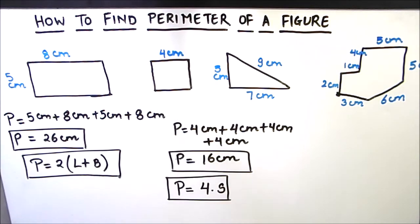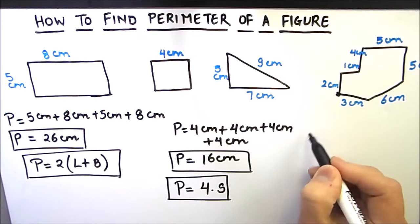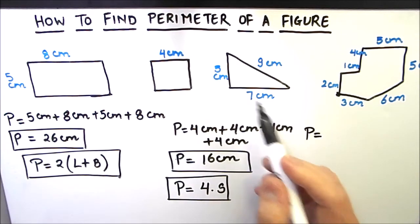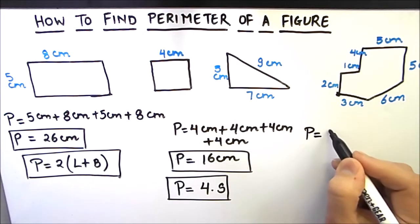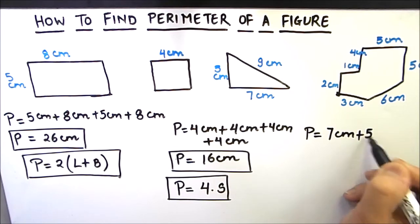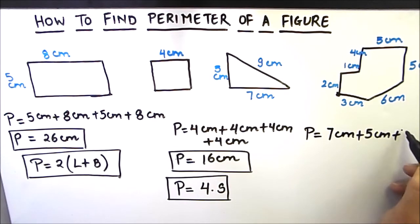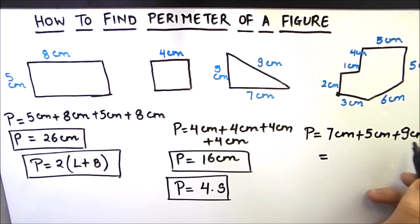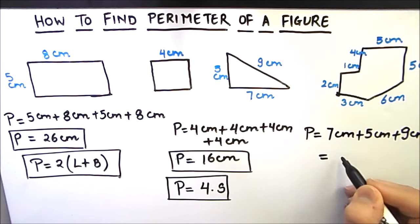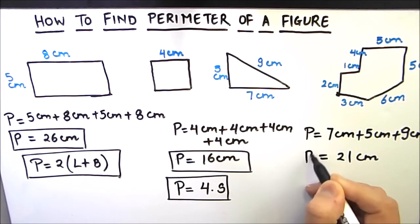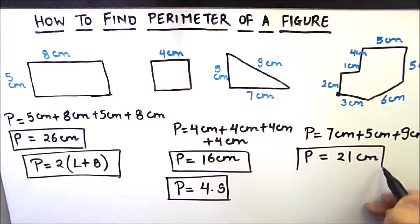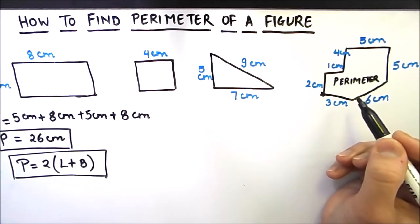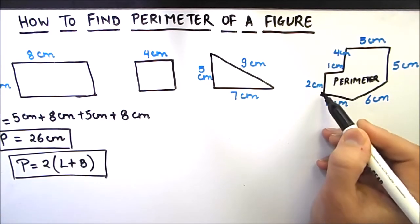Next we have a triangle. For the perimeter of this triangle, we add all three sides: 7 centimeters, 5 centimeters, and 9 centimeters. 7 plus 5 is 12, and 12 plus 9 is 21 centimeters. So the perimeter of this triangle is 21 centimeters.